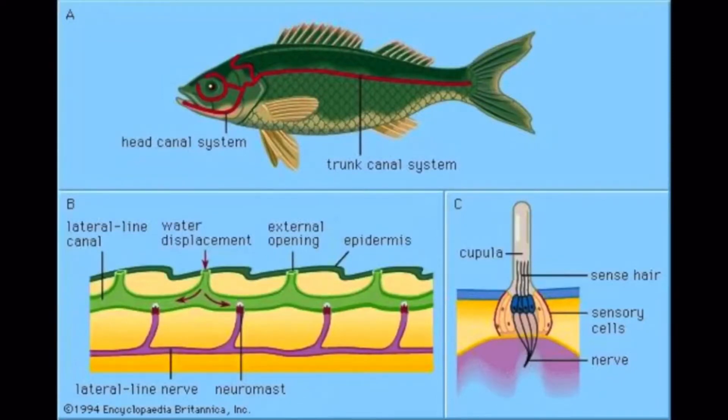One process that has been studied more recently are the lateral line systems of fish. These lateral line systems allow fish to detect water motion and changes in the pressure gradient around them.